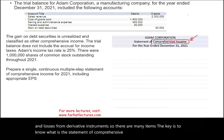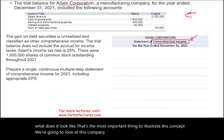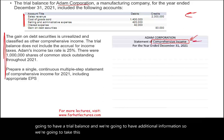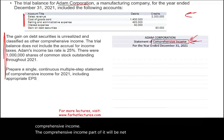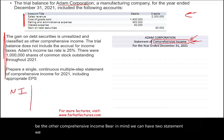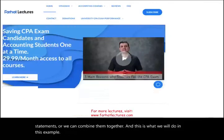The key is to know what the statement of comprehensive income is, what's included, and what it looks like. To illustrate this concept, we'll look at Adam Corporation using a trial balance with additional information. The comprehensive income statement will consist of net income and other comprehensive income. These can be presented as two separate statements or combined together, which is what we'll do in this example.